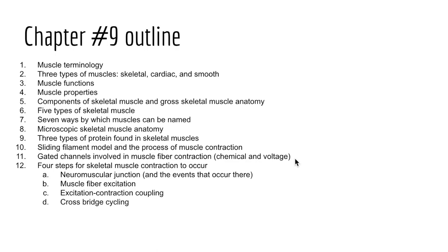Thereafter, we take a more broad scope to consider the neuromuscular junction — where the nervous system ultimately interacts with skeletal muscle to control contraction and relaxation. Finally, we close the lecture with the four steps needed for skeletal muscle contraction to occur. We revisit the neuromuscular junction, consider muscle fiber excitation, look at excitation-contraction coupling, and then cross-bridge cycling.